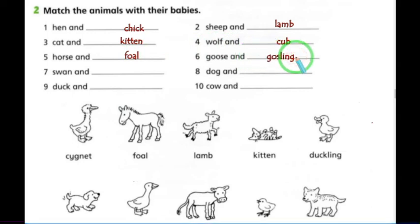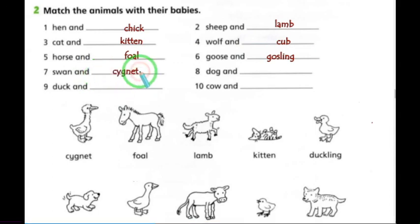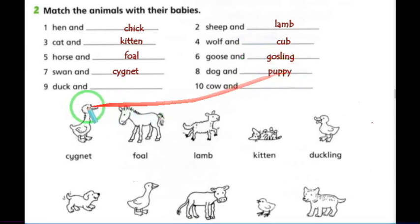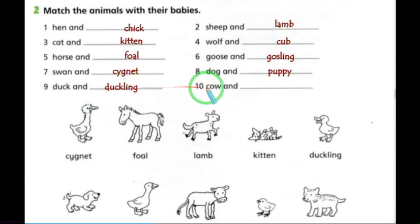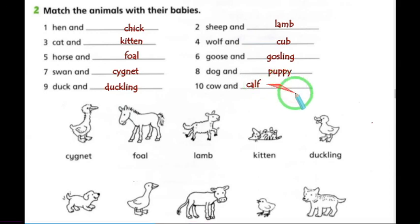Swan with cygnet. Dog with puppy — some people shorten it to 'pup.' Duck and duckling. Cow and calf — note the L is silent, so it's 'calf.' These are the names of the animals and their babies.